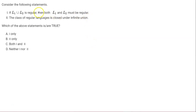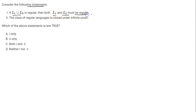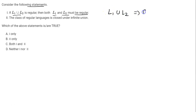Let's solve this question. Statement 1 is: if L1 union L2 is regular, then both L1 and L2 must be regular. Let's see whether this statement is true or false. This statement is actually false. He is saying that L1 union L2 is regular, and from this, L1 and L2 both must be regular.